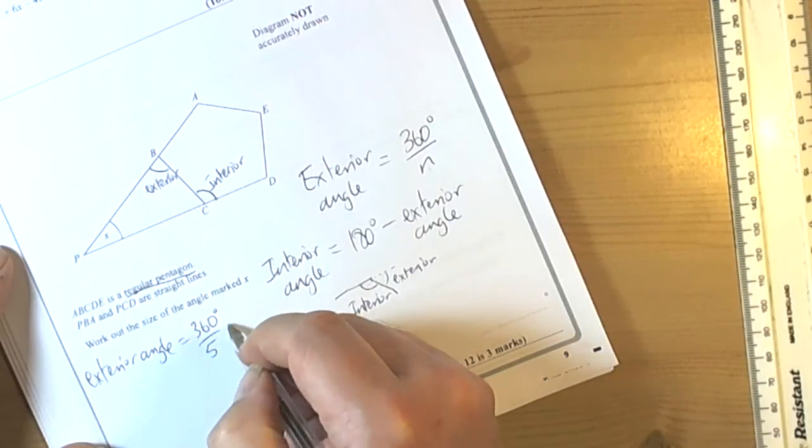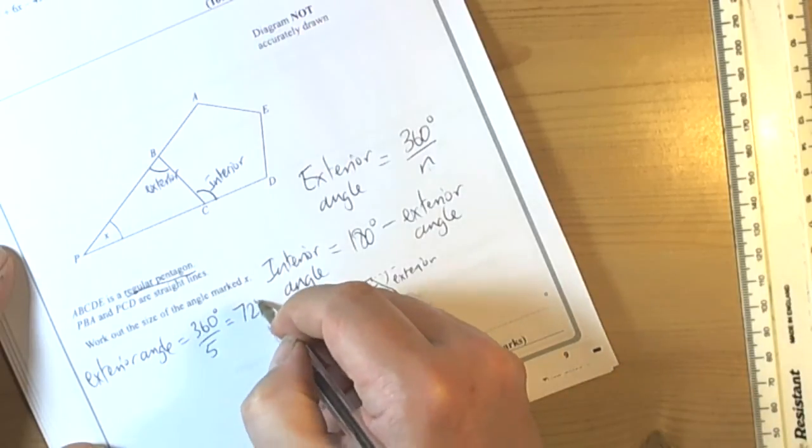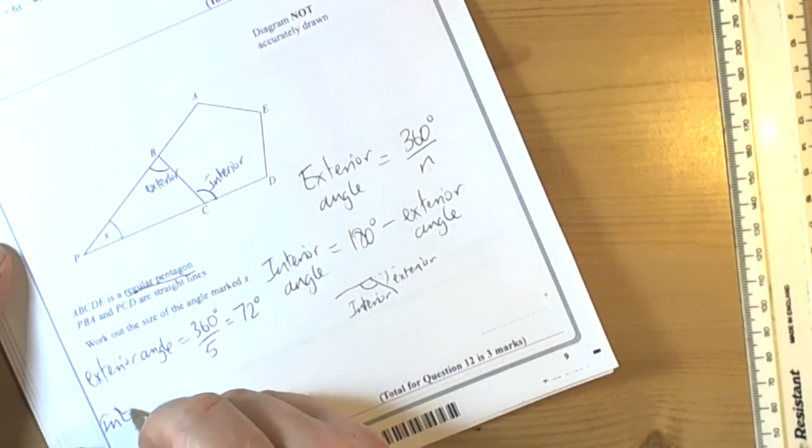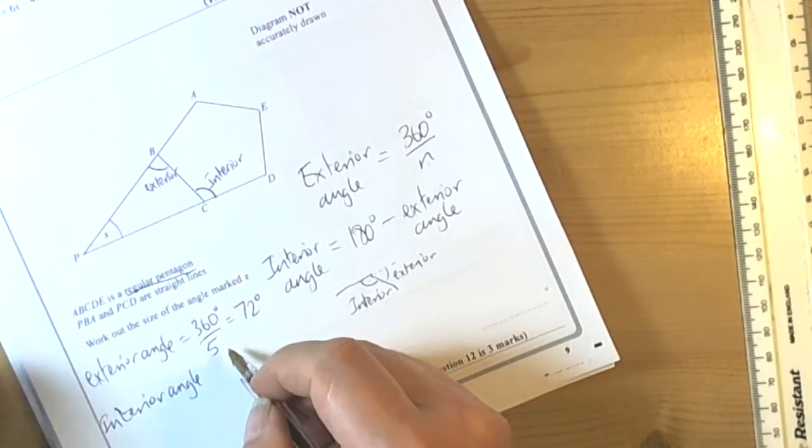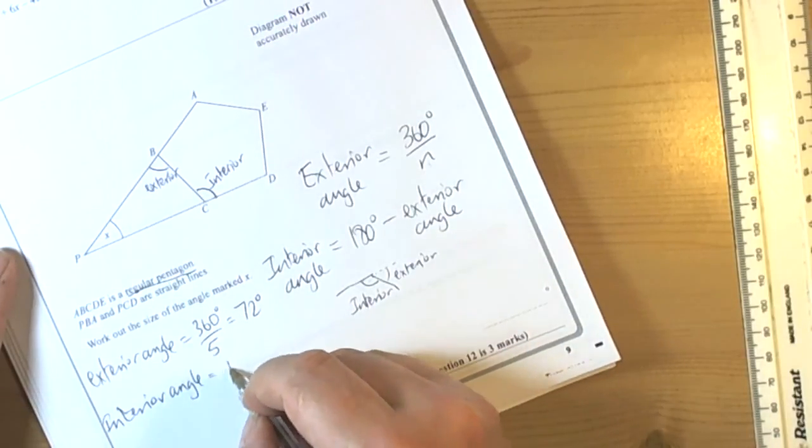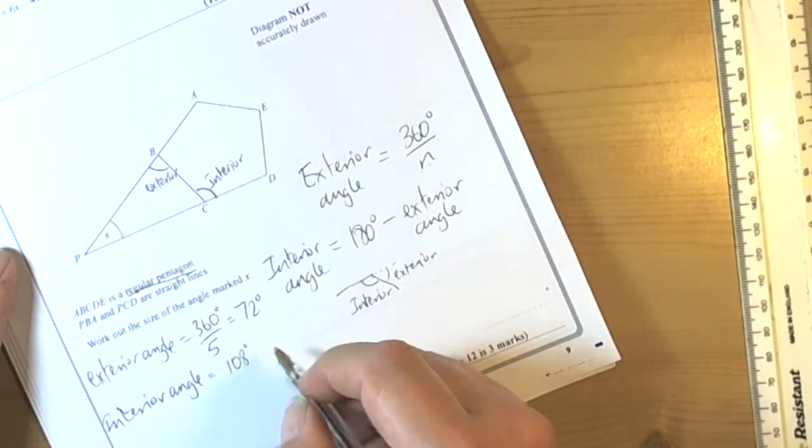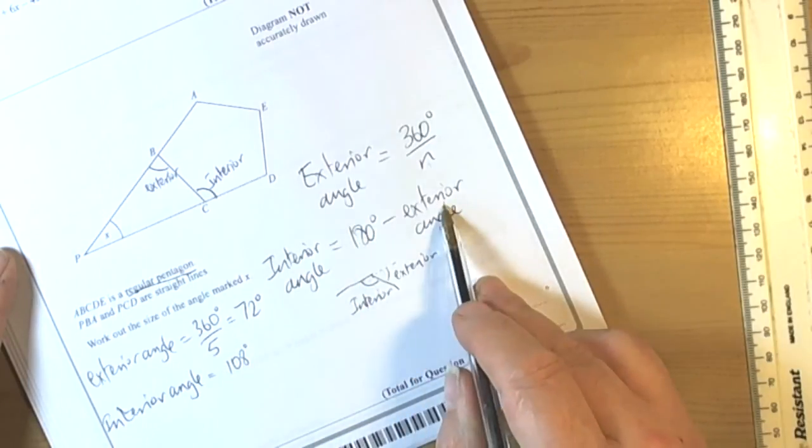Now pentagon has five sides, which gives me 72 degrees. So the interior angle must be 180 degrees because we're doing 180 take away 72.